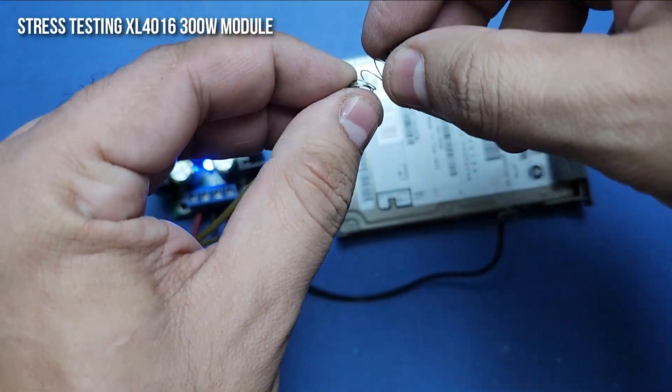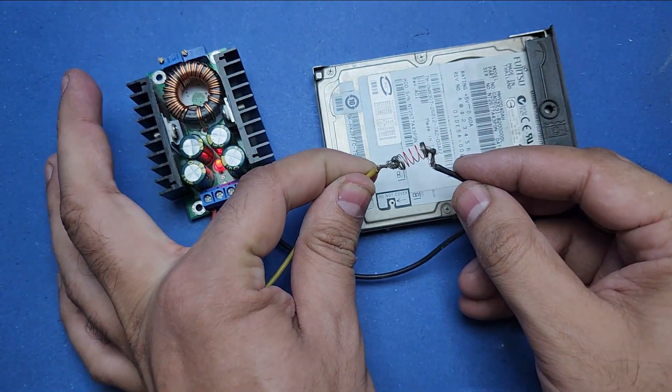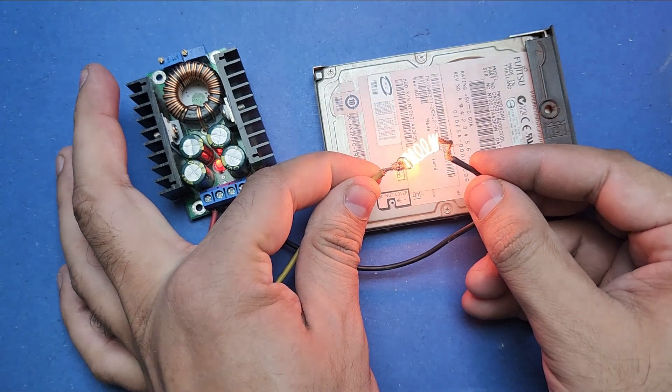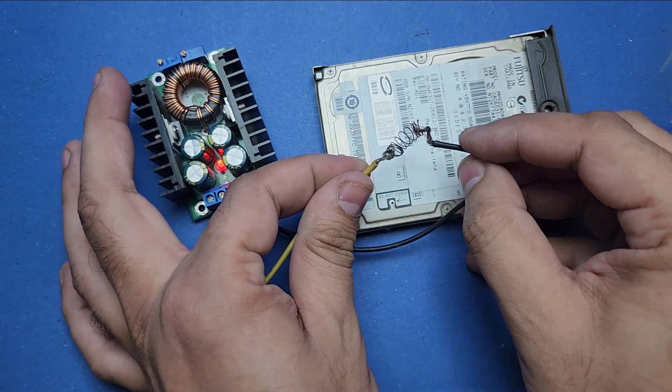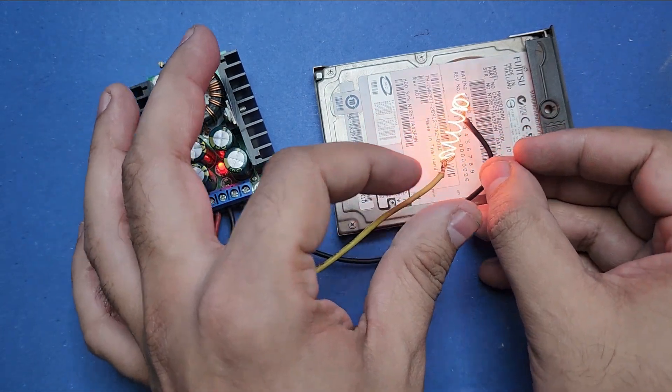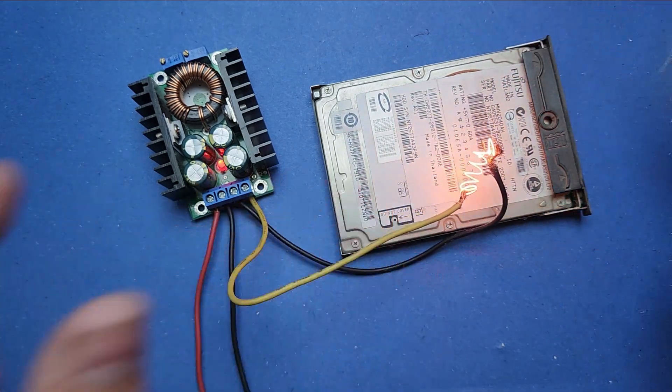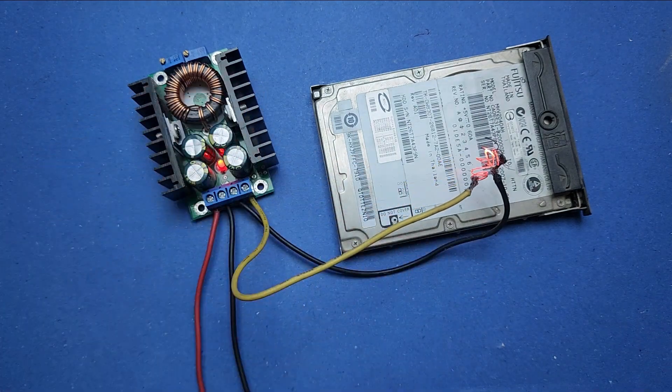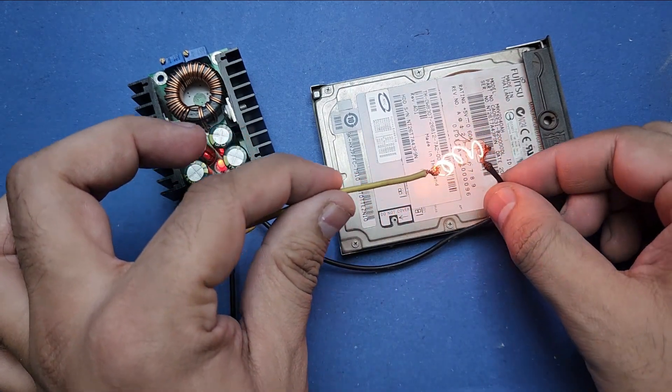Now it is time to do some stress testing. I have set the output current to the max and now I'm going to burn this steel spring. Let's see what this module can do. Wow, it managed to melt the spring which is great. Let's try that again. The spring is glowing like a bulb and melted again. I think our module has passed this test so let's proceed with the rest of the video.